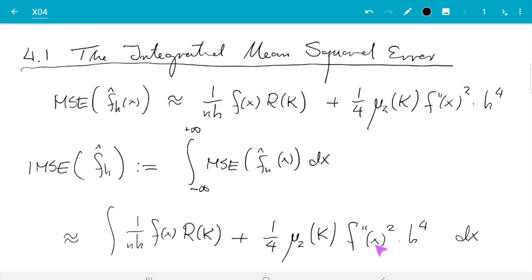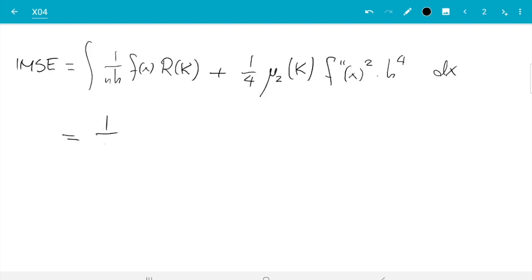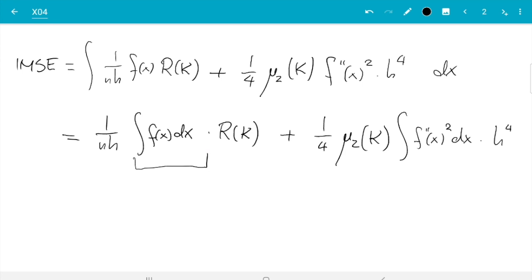So one over nh can go outside the integral. Roughness of k does not depend on x can go outside the integral. And if you look actually the only terms which depend on x are f of x here and f double prime of x here. Nothing else depends on the location. So if I split this integral I can write one over nh outside. Then I have integral f of x dx times roughness of k plus one quarter second moment. Here's another bit depending on x. So integral f double prime of x squared dx times h to the 4. And now there are two things we can do. This one here is the integral over the whole space of a probability density. We know probability density is integrated to 1 so that we can just leave out its 1. 1 over nh times the roughness of k. That's the first term.